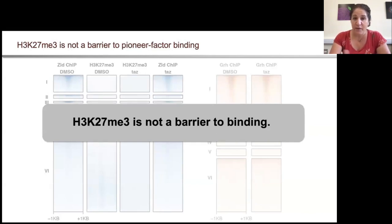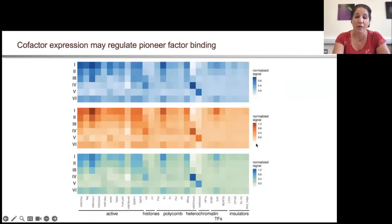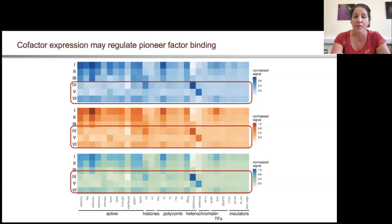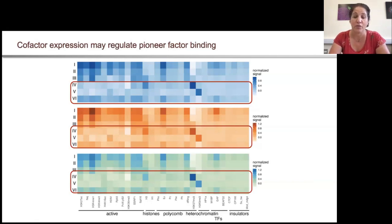One of the really nice things about S2 cells is that people have studied and characterized their chromatin extensively. Tyler went back and looked at multiple data sets of active marks, histones, polycomb, heterochromatin, and insulators at these different classes. We thought maybe there was another chromatin mark enriched that was keeping these proteins from binding even to these H3K27 trimethylated regions. But when we looked, there really wasn't any chromatin mark that popped out as a different mark keeping these regions repressed.